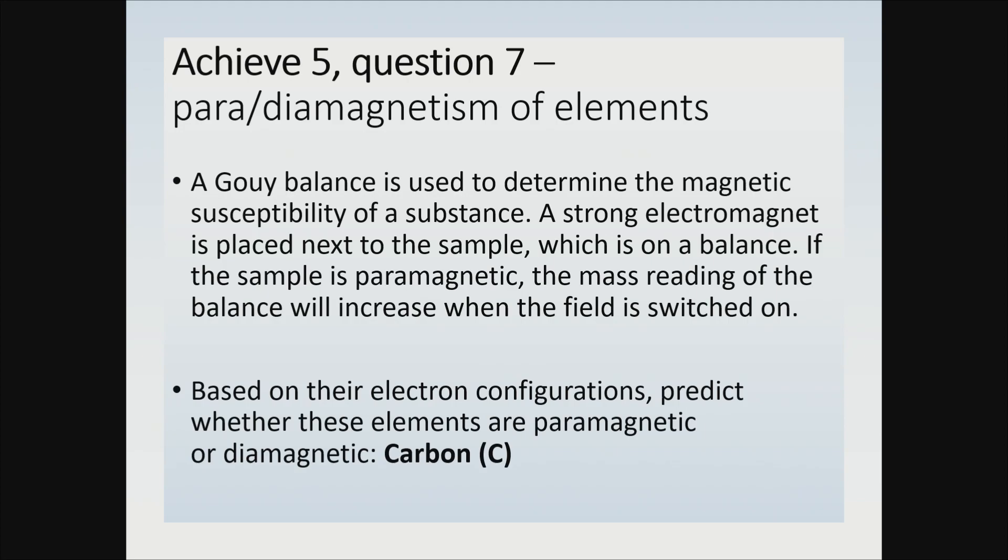Based on their electron configurations, predict whether these elements are paramagnetic or diamagnetic. I think maybe the first one you're given is the carbon atom. So if I can reduce the slide.